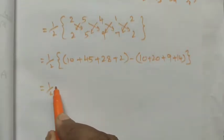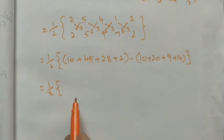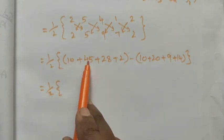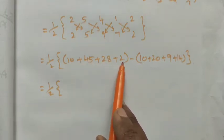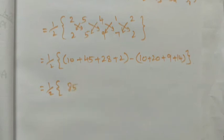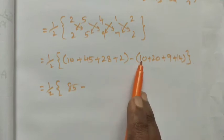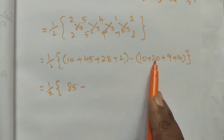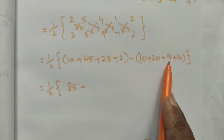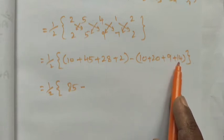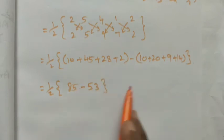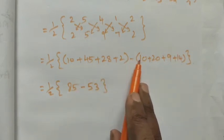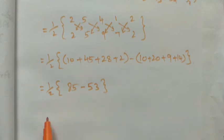Now add the terms in the first term. If you add this, what you get: 10 plus 45 is 55, 55 plus 28 is 83, 83 plus 2 is 85. Here we have the minus sum of this number. Here we have only positive value so 10 plus 20 is 30, 30 plus 9 is 39, 39 plus 14 is 53.